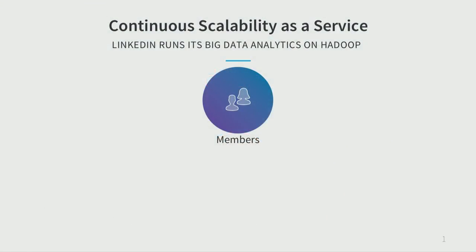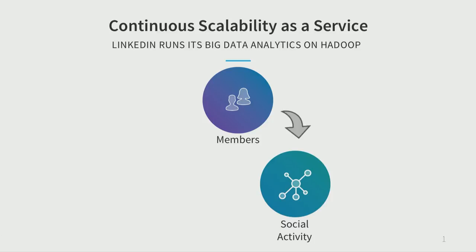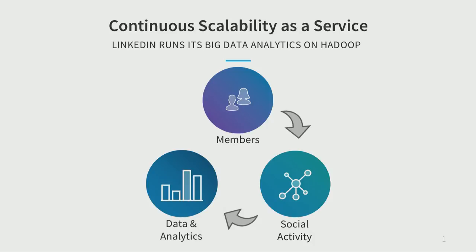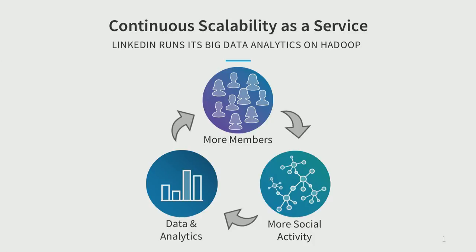LinkedIn runs its analytics on Hadoop. It starts with members who create social activity, which results in data. Analysts run analytics on that data, and the result is intended to create more members, which creates more social activity and more data — that's the vicious cycle of growth.